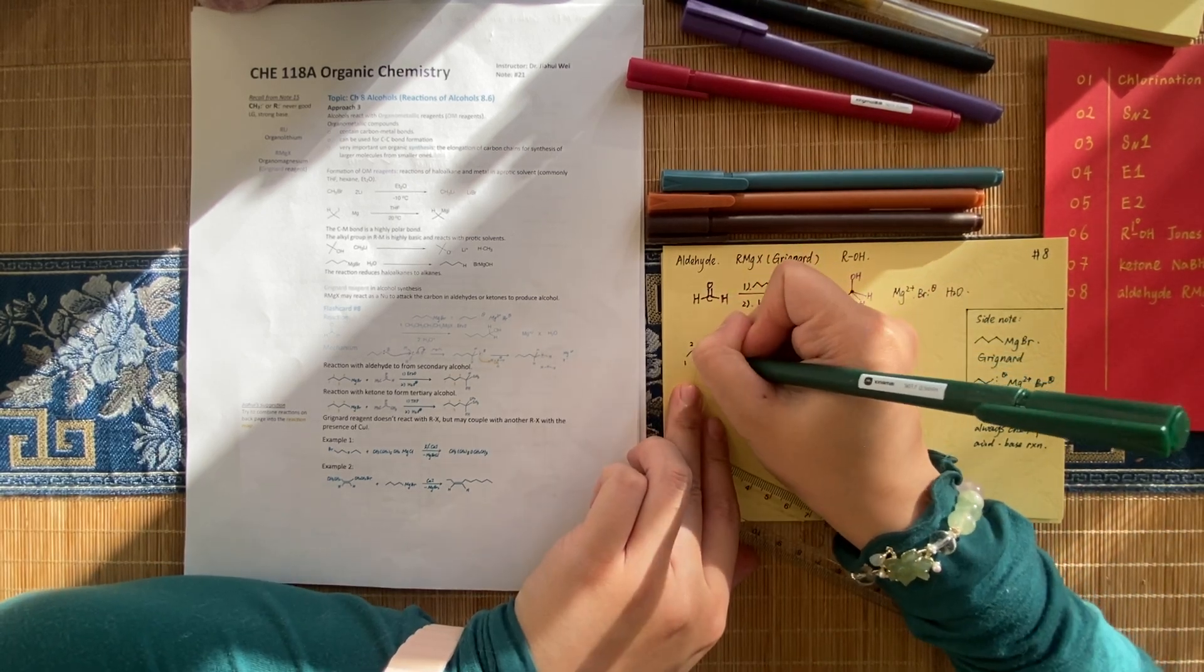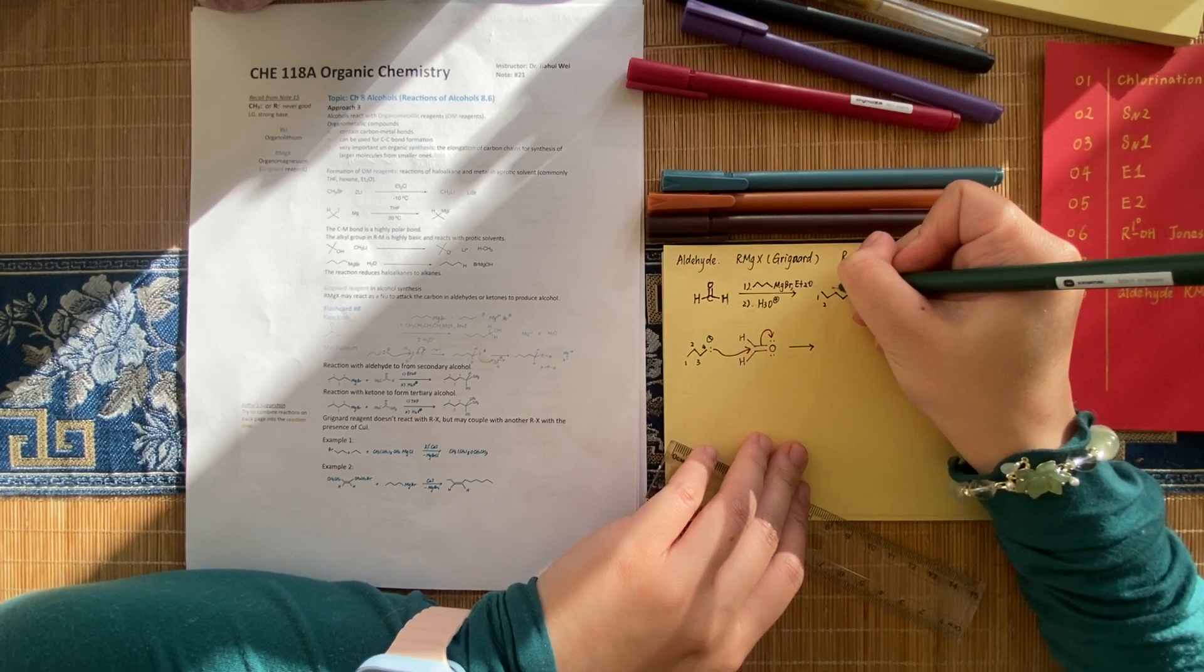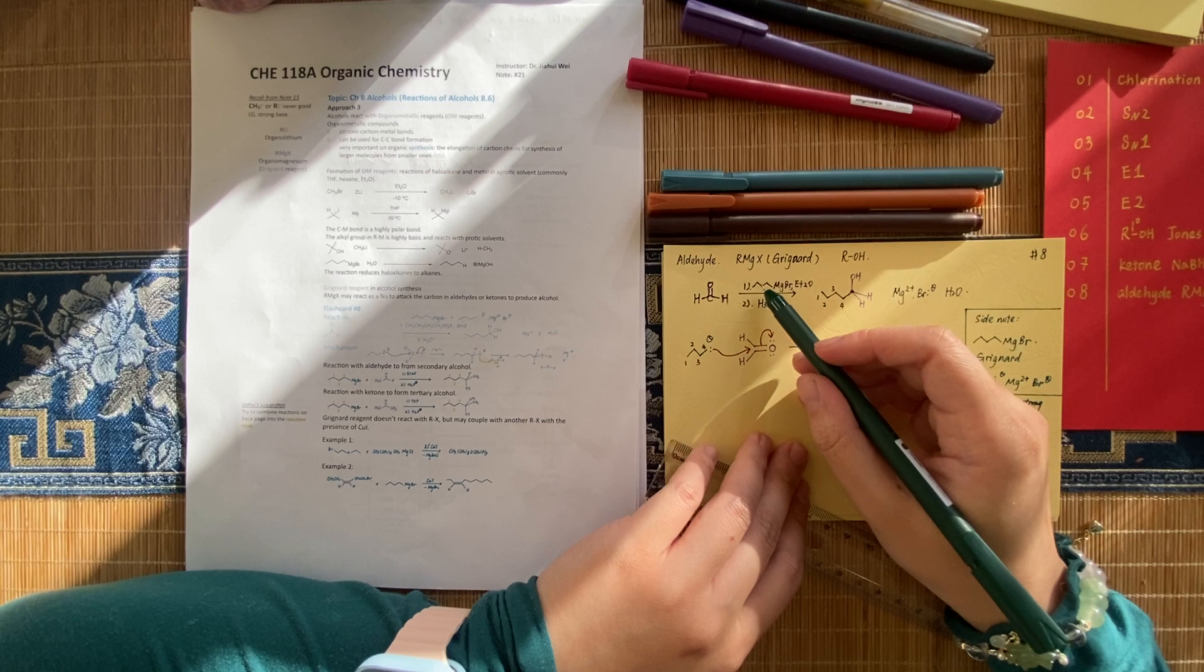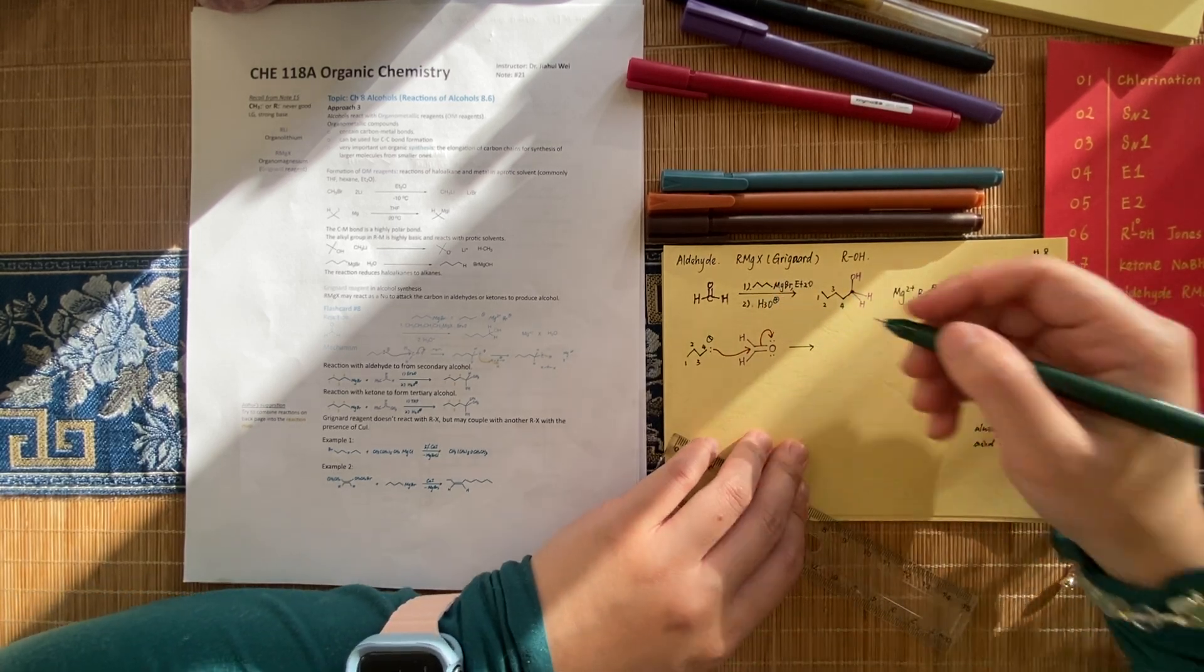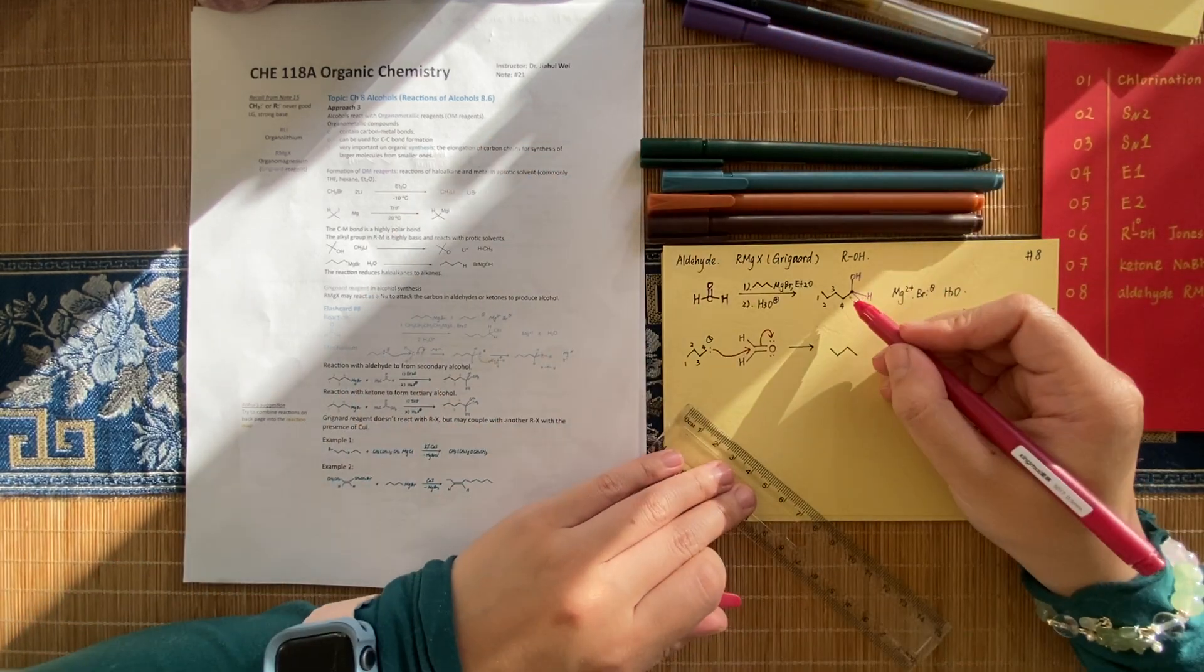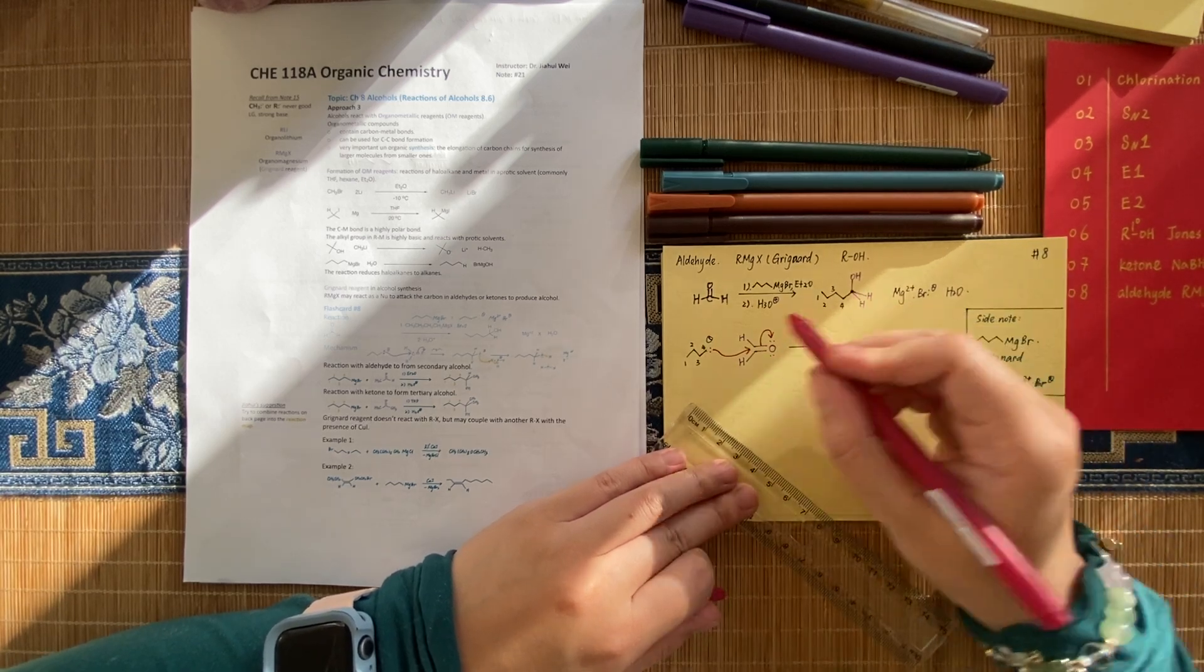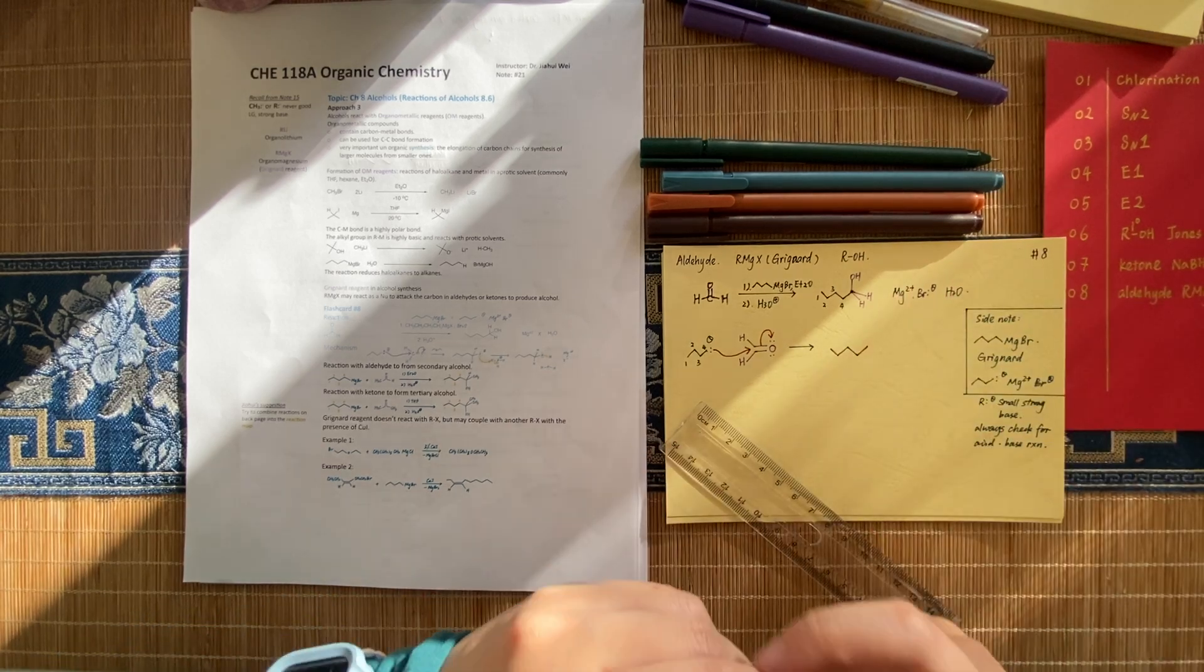So our side chain. One, two, three, four. Our bond between number four and the central carbon of the aldehyde is this red bond. Let's do this.